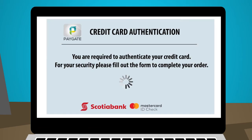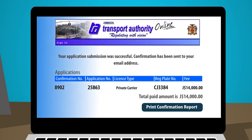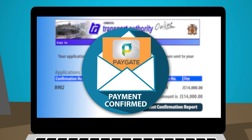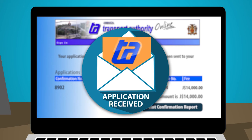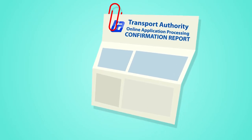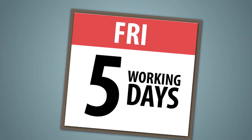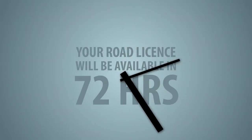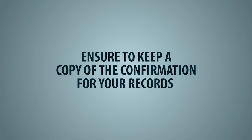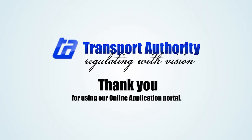You will be directed to the Paygate to review and confirm your order. Select Confirm to submit payment details from your credit card or Visa debit card, then click Pay. A credit card authentication will be done. Two emails will be sent to your inbox: one from Paygate Payment Advice confirming payment, and one from the Transport Authority confirming receipt of the application. The confirmation report is attached — print it and take it to the selected Transport Authority office to collect your road license. For new applicants, your road license will be available in 5 working days. For renewal applicants, your road license will be ready in 72 hours. Do ensure you keep a copy of the confirmation for your records. Thank you for using our online application portal.